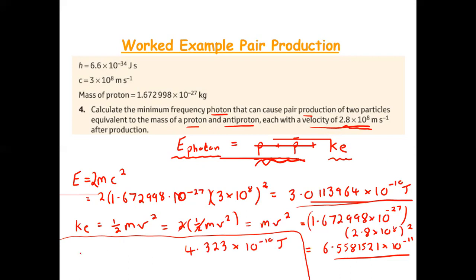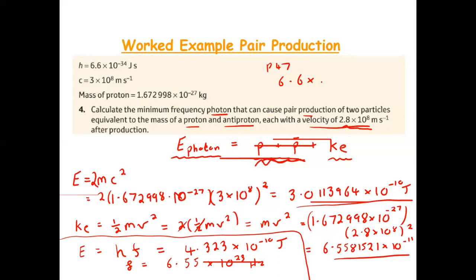Now we can find the frequency, because the energy of a photon is E equals hf. So the total energy required equals Planck's constant times frequency. Therefore frequency equals the total energy divided by Planck's constant. You should get an answer of 6.55 times 10 to the 23 hertz. Planck's constant is on page 47 of your tables: h equals 6.6 times 10 to the minus 34.